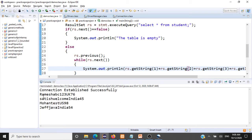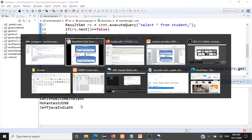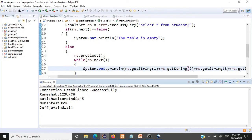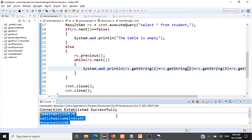After executing, we now get the missing first record back. By doing the empty check, the cursor moved to the second record; we used rs.previous() to go back to the first record and then printed all records from the ResultSet. That's how you use a ResultSet for fetching all records.